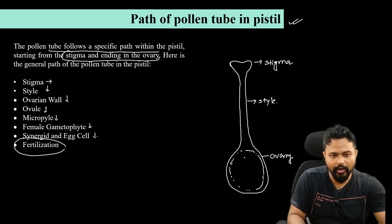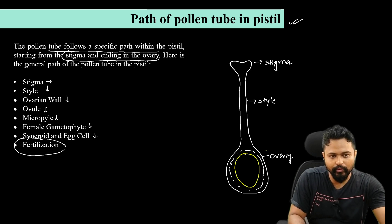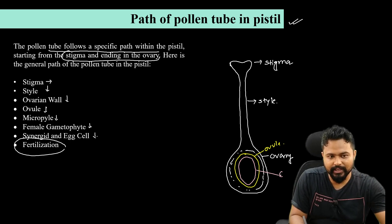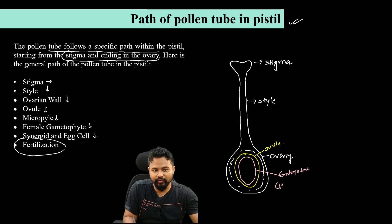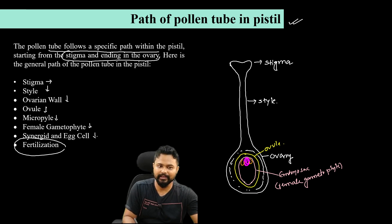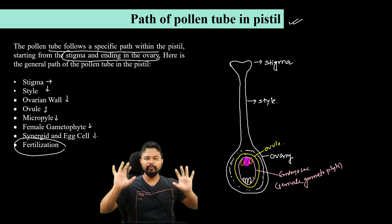This is the ovary wall. The ovary wall contains the ovule. The ovule leads to the development of the embryo sac. So this is the embryo sac. Let's see the female gametophyte and the development of the embryo sac.